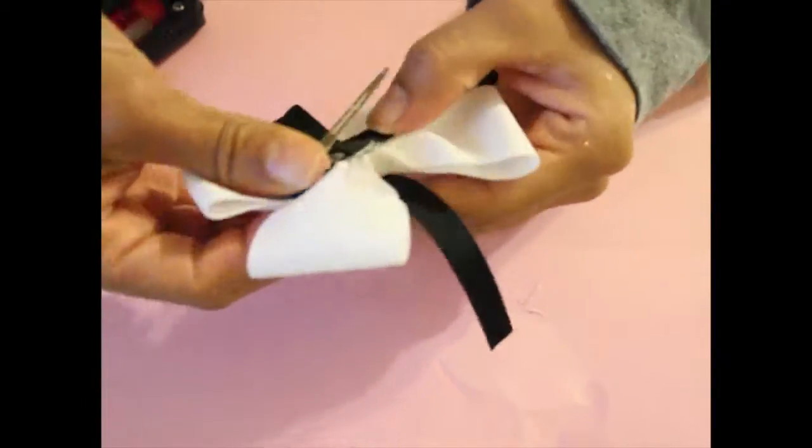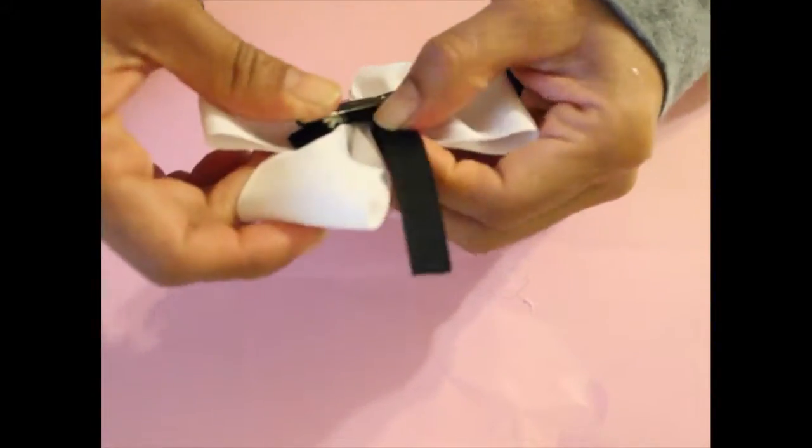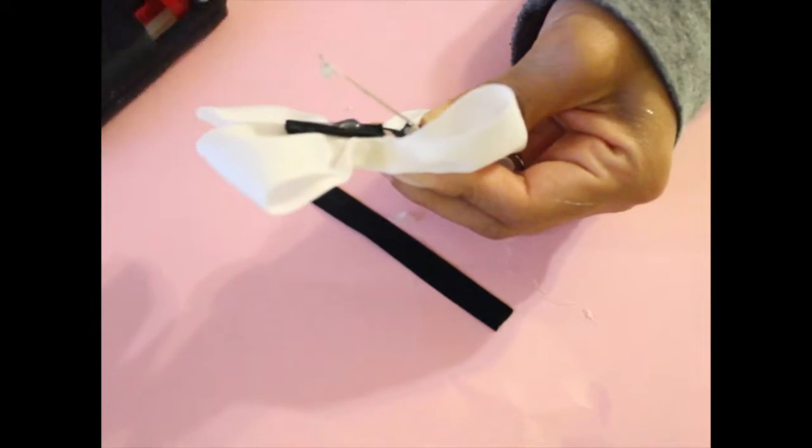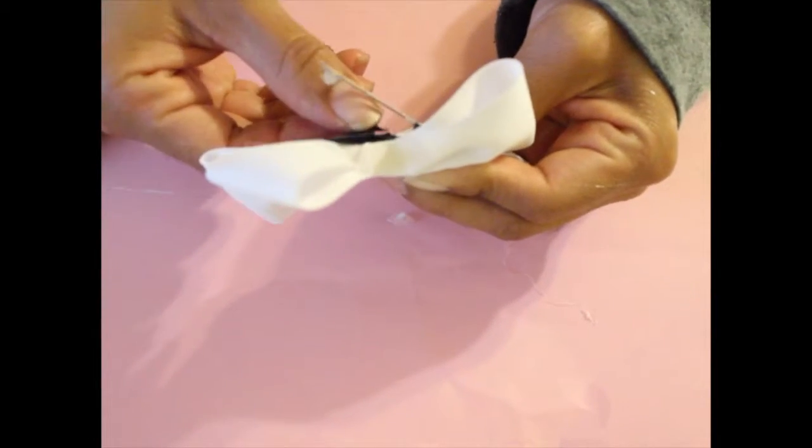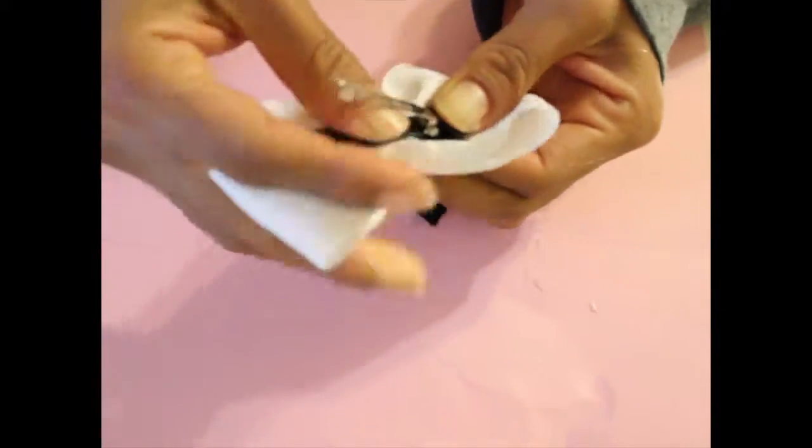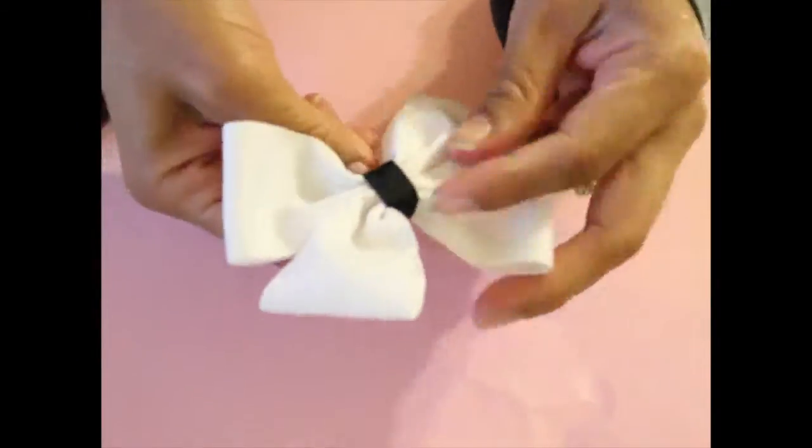So now the center piece, like I said, it's four inches long and you're going to glue the ends to the center. Put a dab of glue and press it down. Just don't close it immediately because then you'll glue it to the clip.